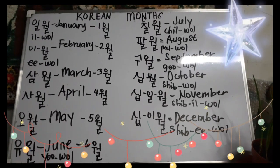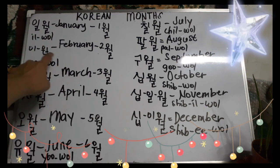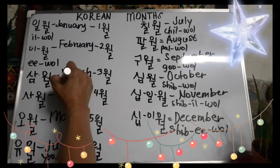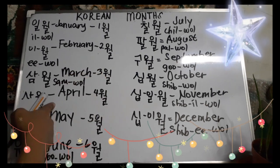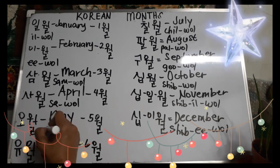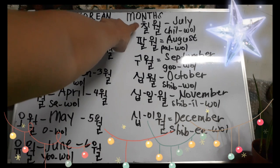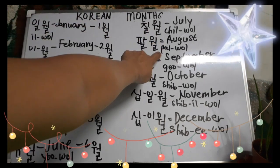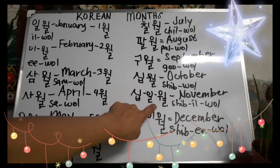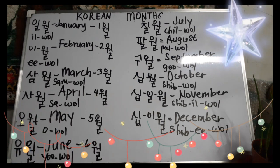Yan po ang ating 12 Korean months. January — Ewol. February — Ewol. March — Samwal. April — Sa Wall. May — Ewol. June — Ewol. July — Chel Wall. August — Pal Wall. September — Co Wall. October — Ship Wall. November — Ship El Wall. December — Ship Ewol. Alright! Okay guys, apply nyo po yan. Yan po ang ating Korean month.